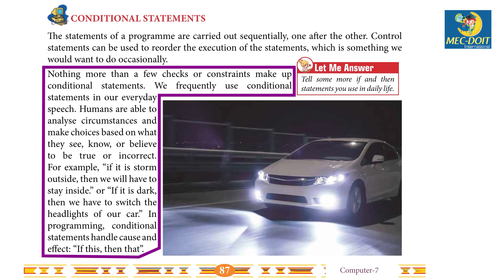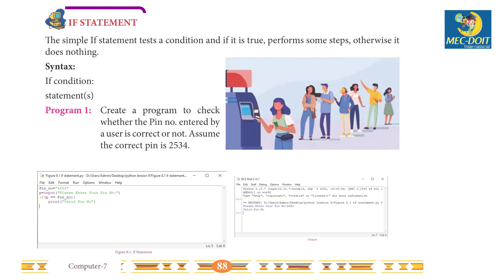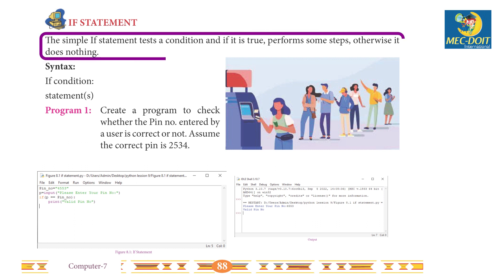We frequently use conditional statements in our everyday speech. Humans are able to analyze circumstances and make choices based on what they see, know, or believe to be true or incorrect. For example, if it is stormy outside then we will have to stay inside, or if it is dark then we have to switch on the headlights of our car. In programming, conditional statements handle cause and effect — if this, then that.